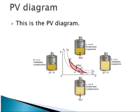Here is the diagram of a PV diagram, or the indicator diagram. In the indicator diagram, pressure is on the y-axis and volume is on the x-axis. The PV diagram involves four steps.